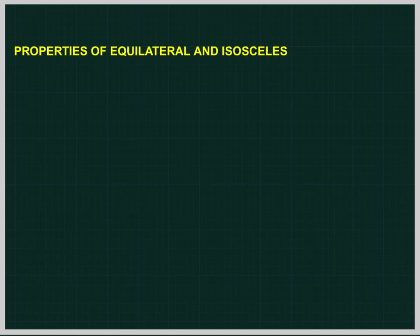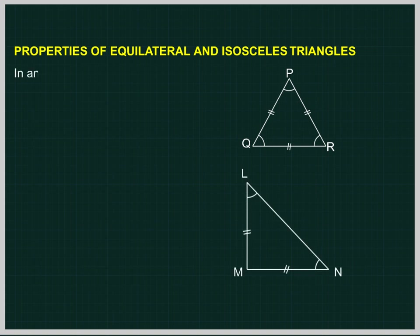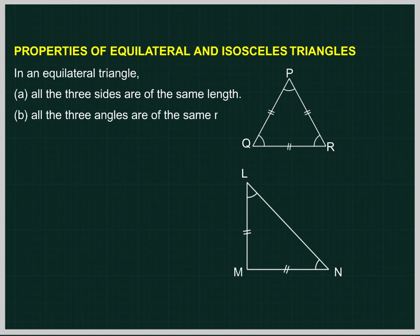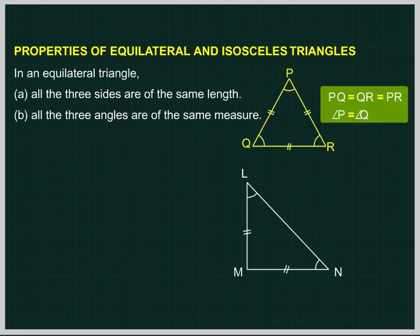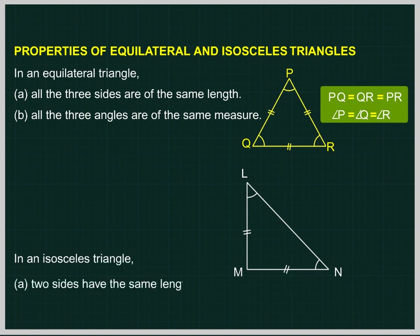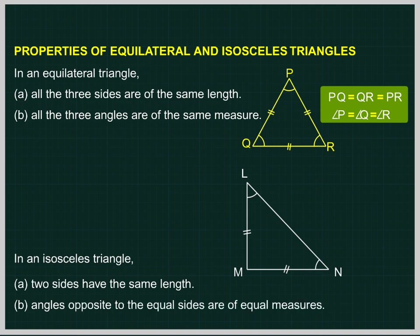Properties of Equilateral and Isosceles Triangles. In an equilateral triangle, all three sides are of the same length and all three angles are of the same measure. In triangle PQR: PQ equals QR equals PR, and angle P equals angle Q equals angle R. In an isosceles triangle, two sides have the same length, and the angles opposite to the equal sides are of equal measures. In triangle LMN: LM equals MN, and angle L equals angle N.